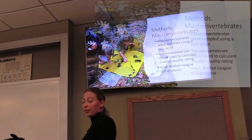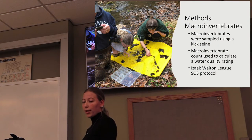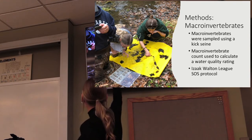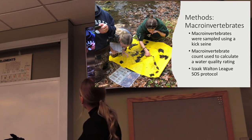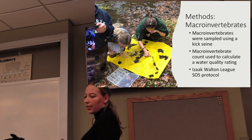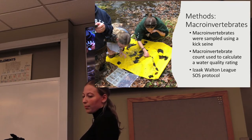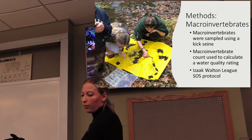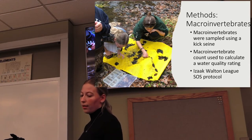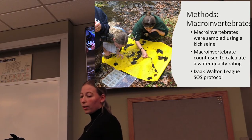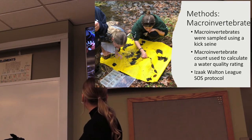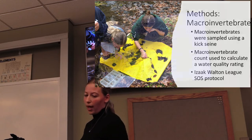The first section of my methods was the macroinvertebrates. We sampled these using a kicksane, which is the yellow thing pictured there. You put that into the bottom of the stream and disrupt the rocks and sediment in front of it, which collects the macroinvertebrates. Then we identify and count them. This can show a water quality rating, and to do that we used the Isaac Walton League Save Our Streams protocol and the corresponding sheet.